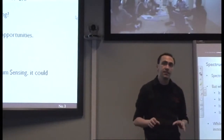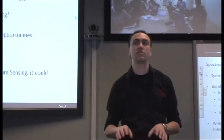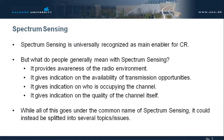Spectrum sensing is universally recognized as the main enabler for cognitive radio. It doesn't matter whether you are using it to access the spectrum in an underlay, overlay, or opportunistic way — it is still a way for being aware of the environment, and that is absolutely needed.